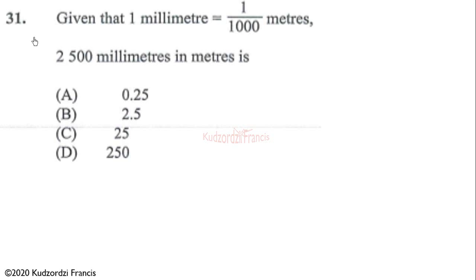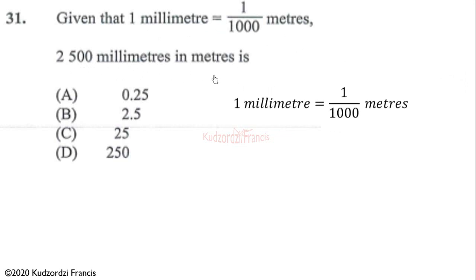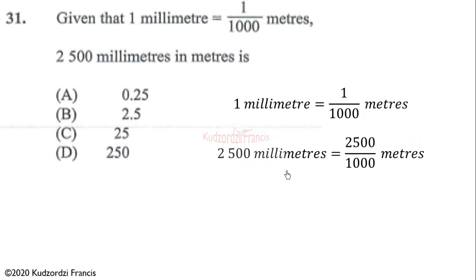We continue with question 31 of the May 2019 paper. Given that one millimeter is equal to one-thousandth of a meter, then 2500 millimeters in meters: because we are converting from millimeters to meters, we divide by 1000. So 2500 divided by 1000 gives us 25 over 10, which is 2.5 meters. Therefore the correct answer is 2.5 meters.